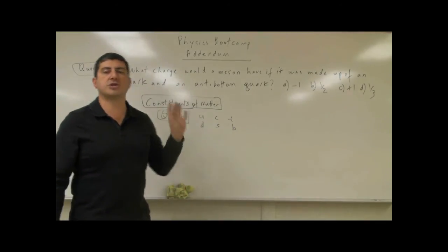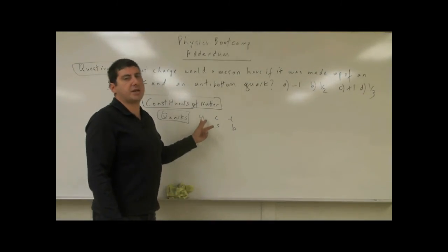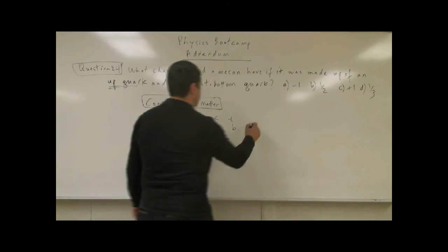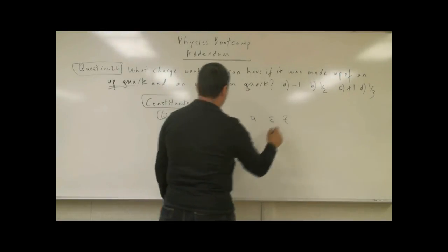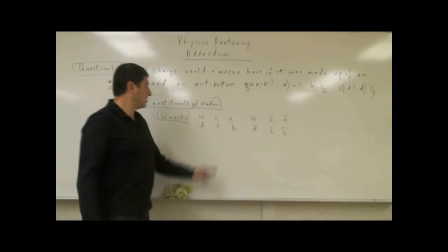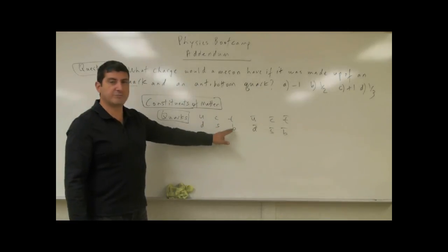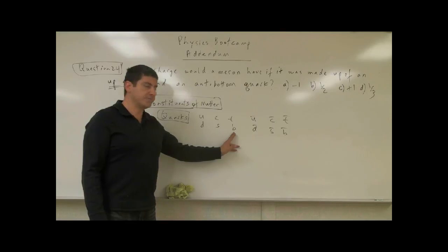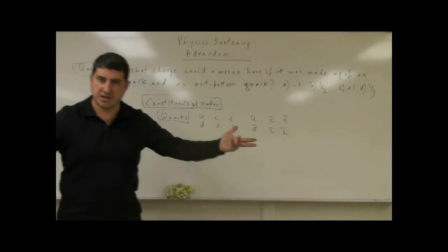The anti-particles have all the opposite properties of the particles themselves: anti-up, anti-down, anti-charmed, anti-strange, anti-top, anti-bottom. As you go from up to bottom, the quarks are getting heavier. Quarks make up matter such as neutrons, protons, and things like that.